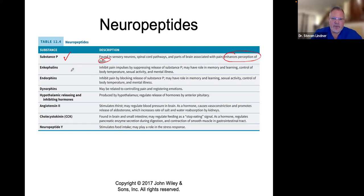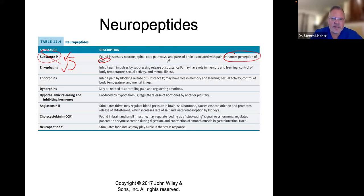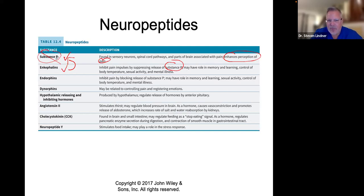Substance P and enkephalins — enkephalins are going to block substance P. Enkephalins inhibit pain impulses by suppressing the release of substance P. This is why a lot of people do acupuncture. It is very well documented that acupuncture increases enkephalins, which is why it helps with pain management.